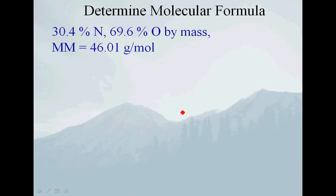Determining the molecular formula requires one other piece of information beyond the empirical formula: the molar mass. We'll come back to that in a moment. Here's a different problem — this compound only contains nitrogen and oxygen by mass, and we know its molecular weight. We are given a mass percent and want to know the empirical formula.